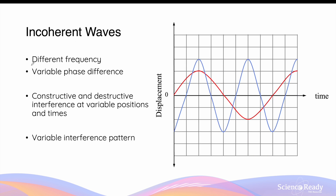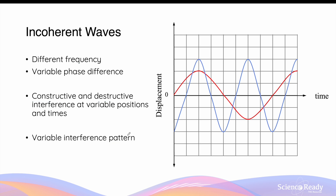Incoherent waves are ones with different frequencies. You can see that the blue wave here has a higher frequency compared to the red wave. When two incoherent waves undergo wave superposition, the phase difference is not constant — it is variable. At one time point, the two crests of the waves coincide, which means they undergo constructive interference. But then at the next time point, the crest of the blue wave actually meets the trough of the red wave. So the phase difference between the two waves is not constant, meaning the two waves will undergo constructive and destructive interference at variable positions and times, producing a variable interference pattern.